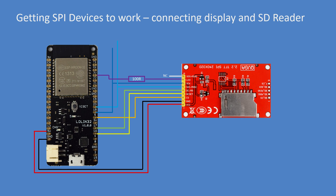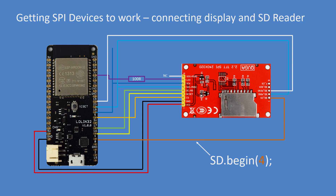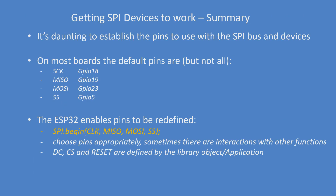I wanted to move on and add in the SD card reader. I had to add SD.begin with chip select on pin 4 — GPIO 4 — and then parallel up all the rest of the SPI connections.